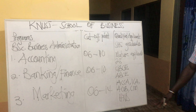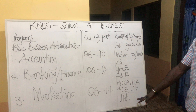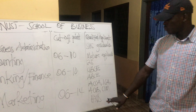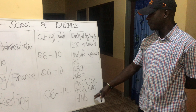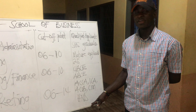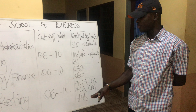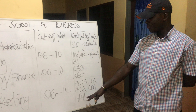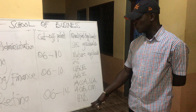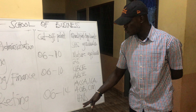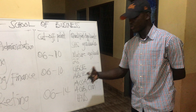HND applicants can also apply for these programs and must have at least a second class division. They also have entrance exams and an interview. If they pass, they can be admitted at Level 200 or Level 300, depending on how well they perform in the entrance exams and the certificate class they hold.